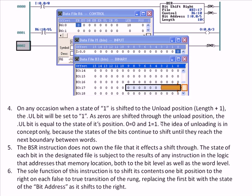The BSR does not own the file it affects. The state of each bit in the designated file is subject to the results of any instruction in the logic that addresses that memory location, both at the bit level and the word level. The sole function of this instruction is to shift the contents of its file one bit position to the right on each false-to-true transition of the rung, replacing the first — that is, the highest — bit with the state of the bit address. For B3:17 with length 10, bit 9 is the highest bit, so it loads into bit 9, then shifts toward bit 0, and when it shifts out, the unload bit comes on.